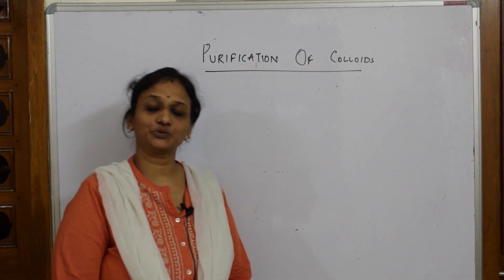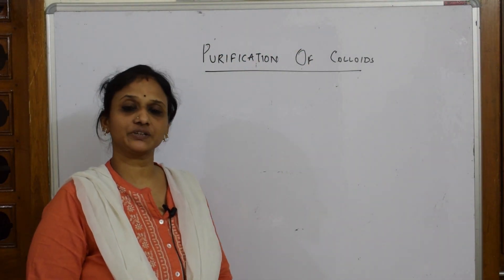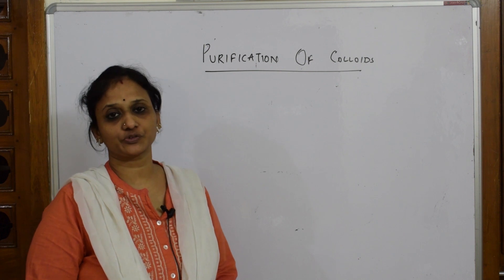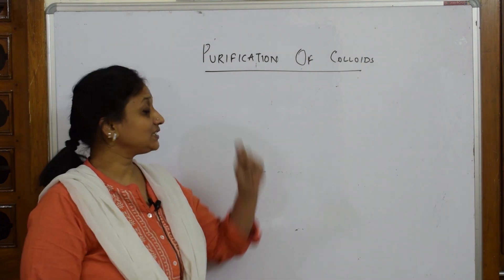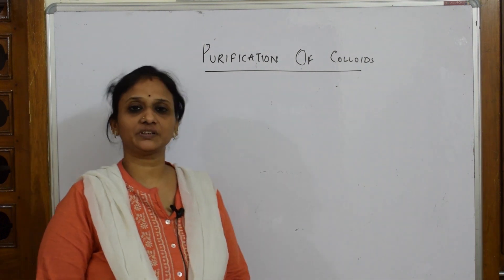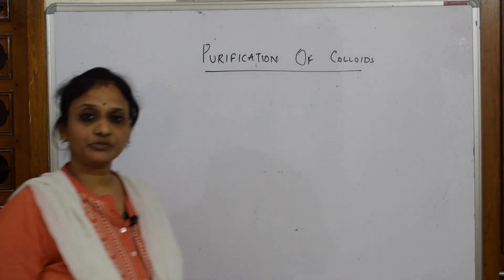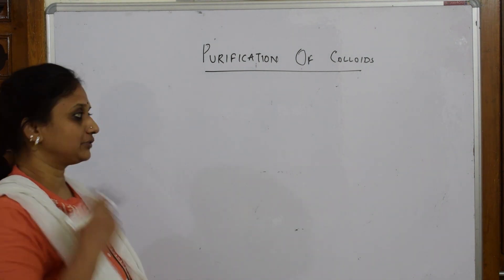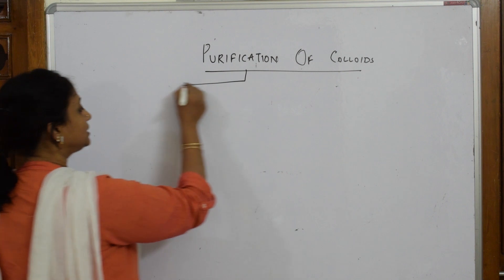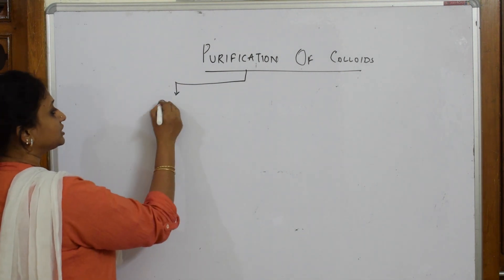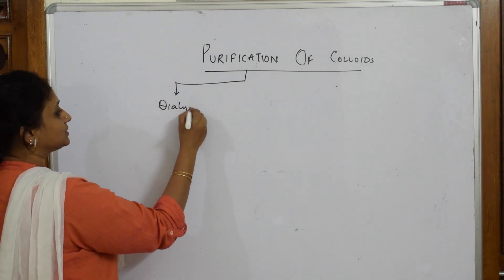Alright, now let us come back and do the last topic of the chapter. Till now we have done preparations of colloids and learnt the properties of colloids. Now we will see how to purify these colloids. Colloids can be purified by four different methods. We will be learning the first purification method, that is dialysis.